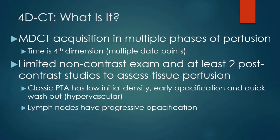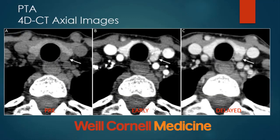Lymph nodes, on the other hand, have progressive opacification over time. Classically on 4D CT, a parathyroid adenoma is low in density compared to thyroid tissue on the non-contrast exam, enhances uniformly and intensely, and demonstrates very nice washout on delayed images.